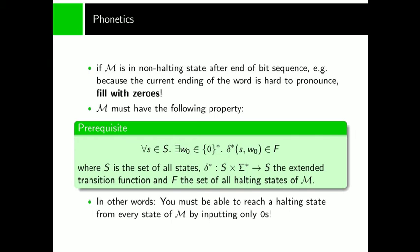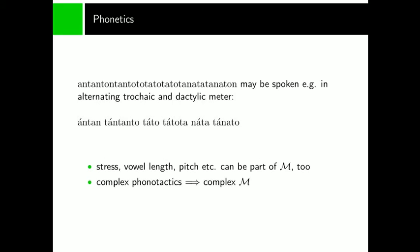As our resulting sentence is still quite hard to read, we can put in spaces and accents at will to signify stressed syllables. For this example, I used an alternating trochaic and dactylic meter. Antan, Tantanto, Tato, Tato, Tata, Nata, Tanato. Sounds quite pronounceable. Of course, stress and any other articulation feature can be part of the phonetic function too. The more complex the phonetics, the shorter the speech can get. Unfortunately, the Mealy machine gets arbitrarily complex as well, depending on the number of phonemes, articulation features and complexity of the phonotactics.